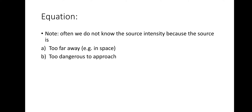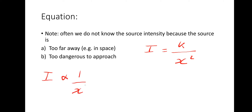So we've got an equation for intensity. Often we don't know the source intensity because the source is possibly too far away or it might be too dangerous to approach. There's an equation we use: intensity equals some constant k divided by the distance squared — I = k/x². As you can see, intensity is proportional to 1 over the distance squared. Intensity could be counts per second, or becquerel; distance x is in metres. We won't actually use k directly, but I'll show you how this works in the next example.